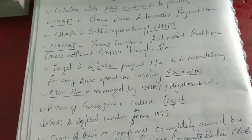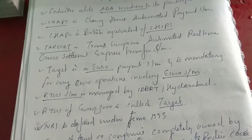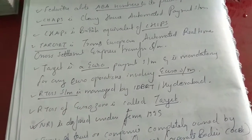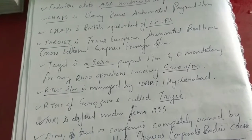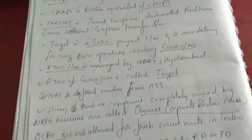The RTGS system is managed by IDBRT of Hyderabad. RTGS of the Eurozone is called TARGET. NRI is defined under FEMA 1999.